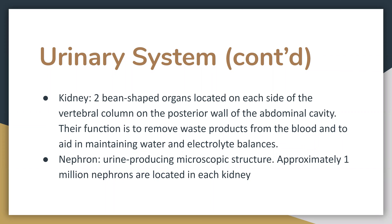The nephron, which is the urine-producing microscopic structure, numbers approximately one million — there are approximately one million nephrons located in each kidney.